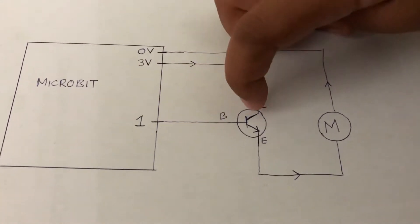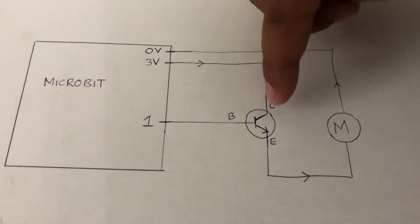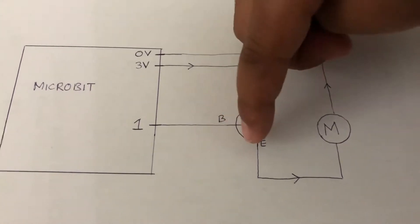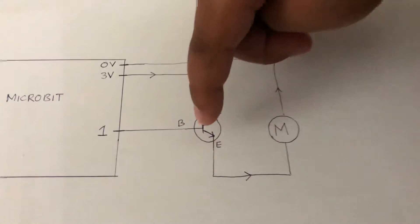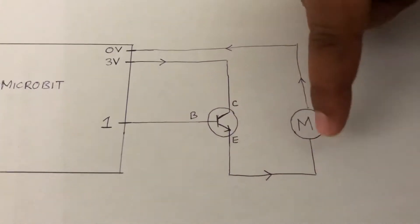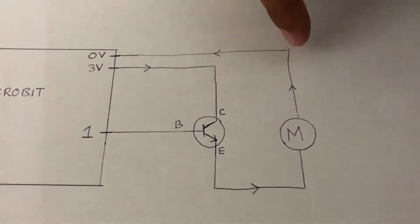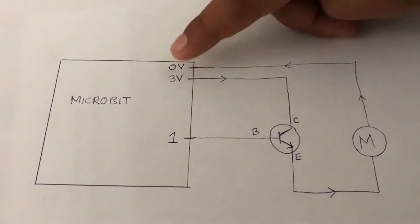The current flows from the collector to the emitter, and then the electricity travels through into the motor and into the ground or 0V. Let me show you it working.